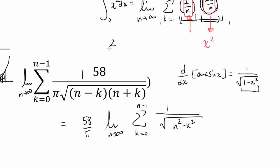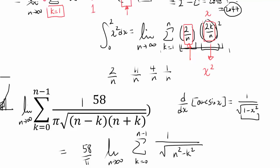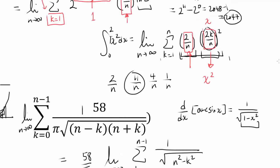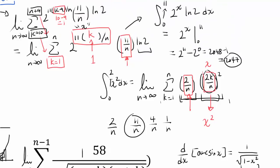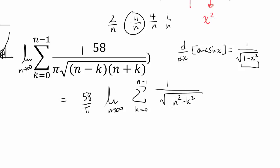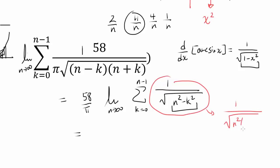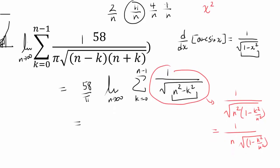We want terms like 1 over n to appear in our expression so we can identify the Riemann sum. We do this by factoring n squared out of the denominator: the square root of n squared times (1 minus k squared over n squared) equals n times the square root of 1 minus k squared over n squared. This gives us 1 over n popping into our expression, with the function 1 over the square root of 1 minus x squared where x equals k over n.